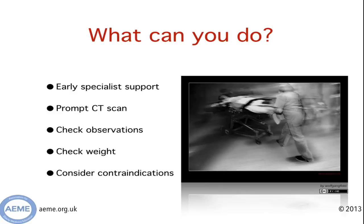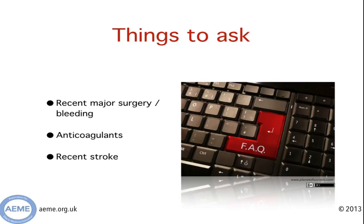You also need to think about the contraindications to treatment. Helpful things to ask about include any recent major surgery or major bleeding, and any anticoagulant use. Being on warfarin isn't itself an absolute contraindication — rather, we go off the INR — so it's important to ensure a coagulation screen has been checked. You should also ask whether they've had any recent stroke, and note that any intracerebral haemorrhage at any time is usually considered a contraindication.